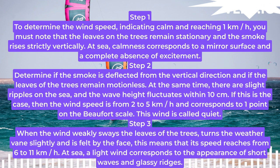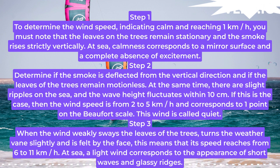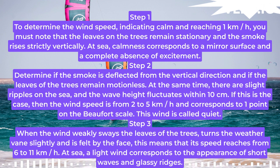Step 2. Determine if the smoke is deflected from the vertical direction and if the leaves of the trees remain motionless. At the same time, there are slight ripples on the sea and the wave height fluctuates within 10 cm. If this is the case, the wind speed is from 2 to 5 km/h and corresponds to 1 point on the Beaufort Scale. This wind is called quiet.